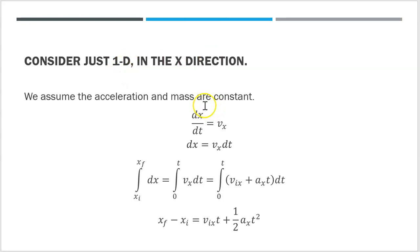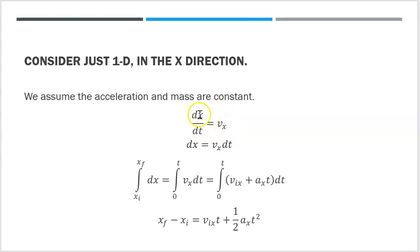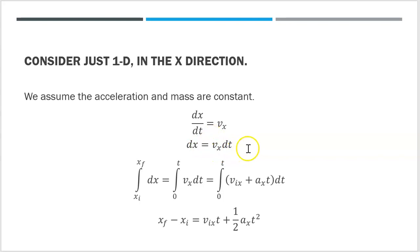Now we're going to take the definition of velocity and work from there, still assuming acceleration and mass are constant — that constant force assumption is very important. Remembering our definition of velocity, vx equals dx/dt, the time rate of change of position. I can do the same thing as before: multiply both sides by dt to get dx equals vx times dt.